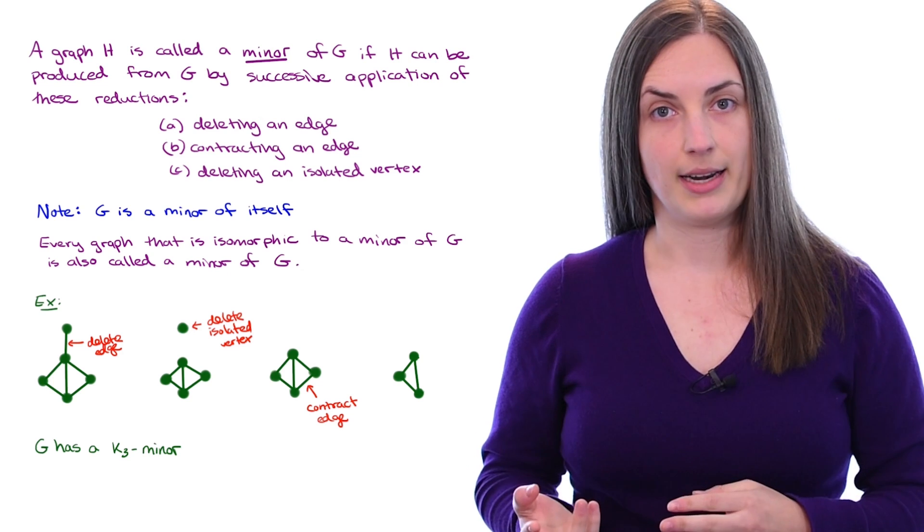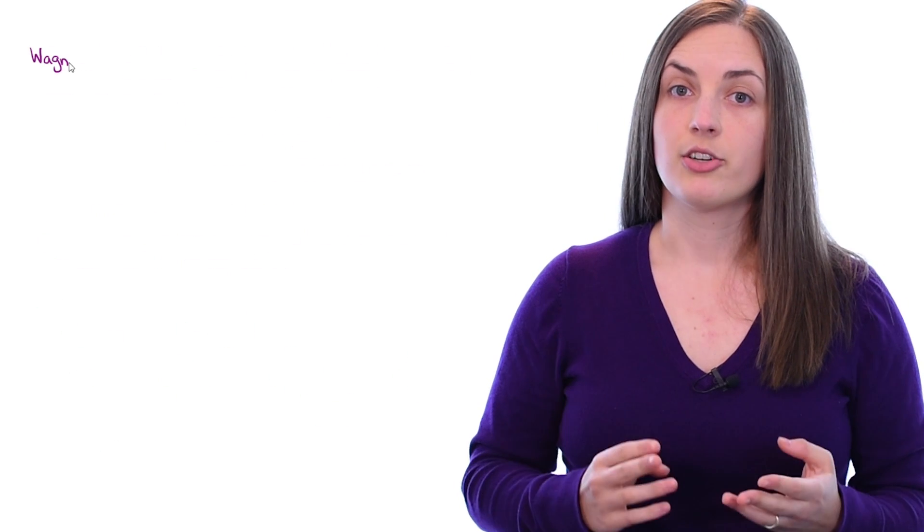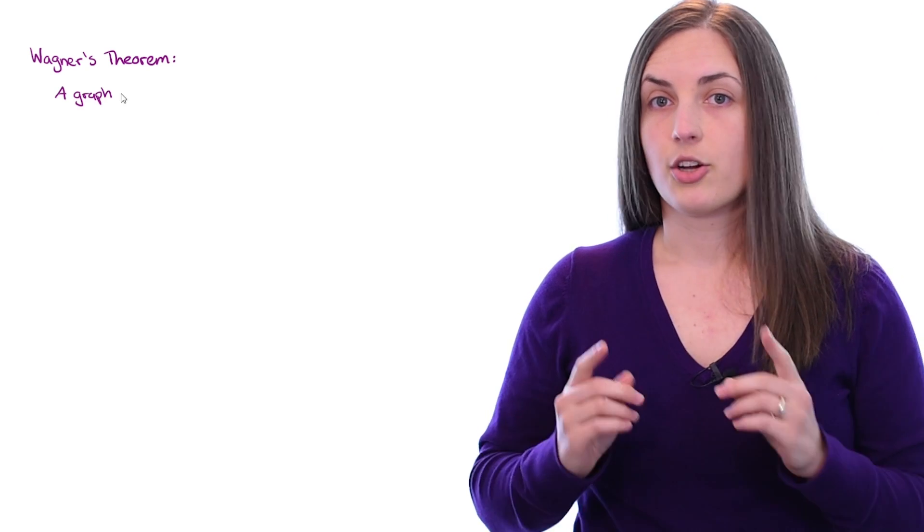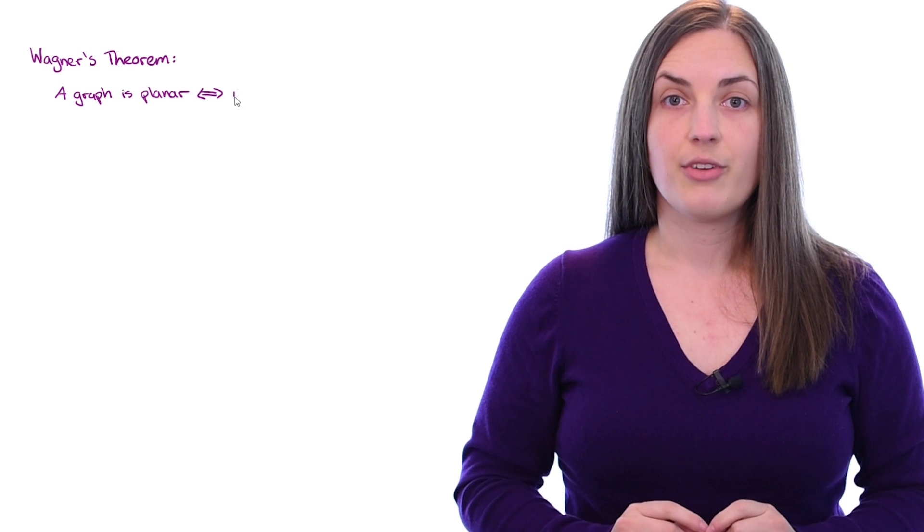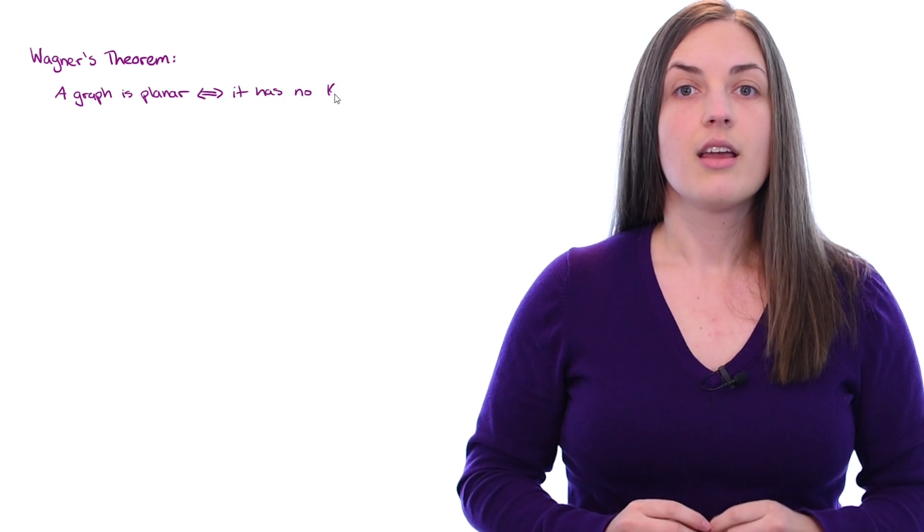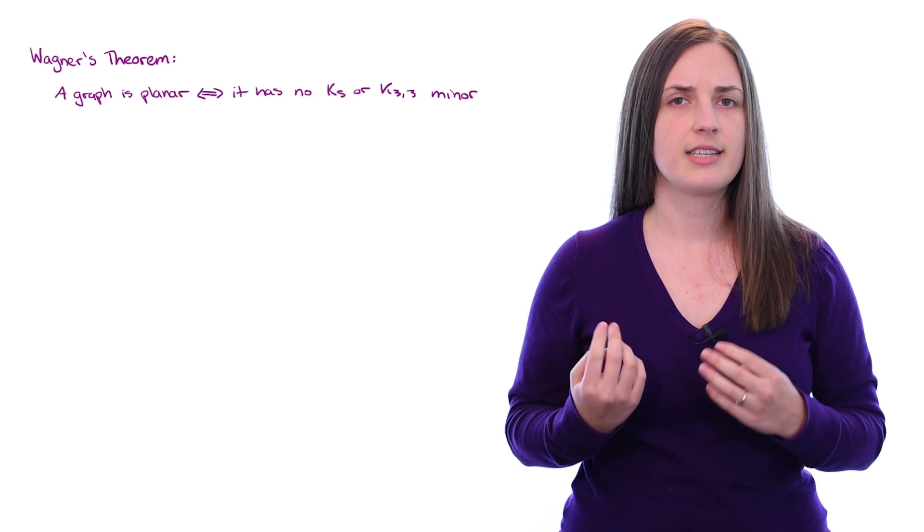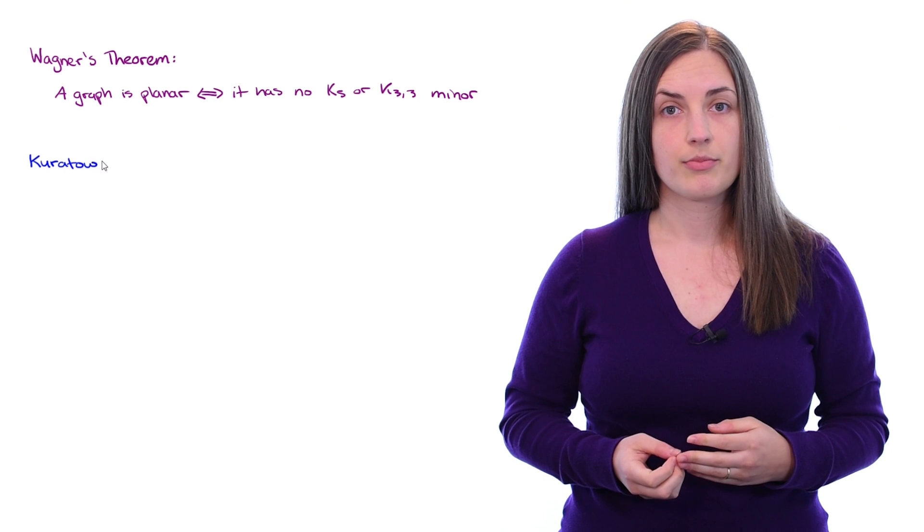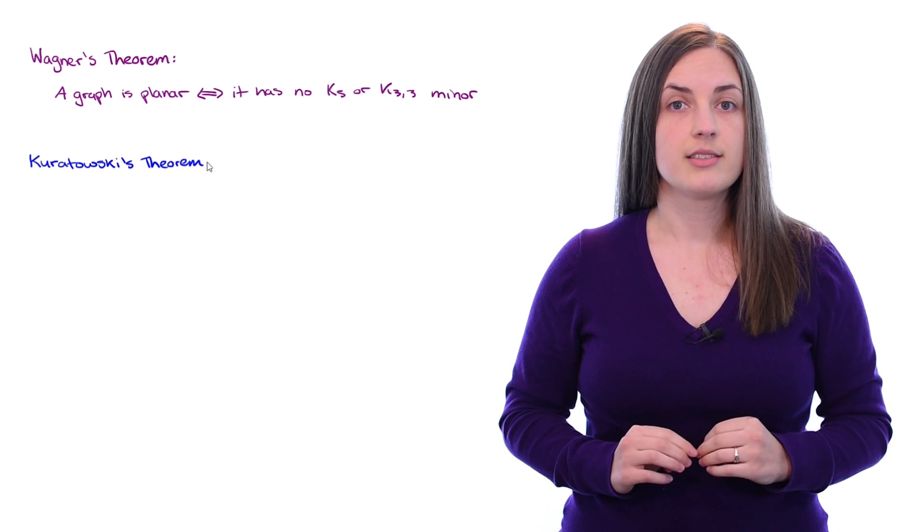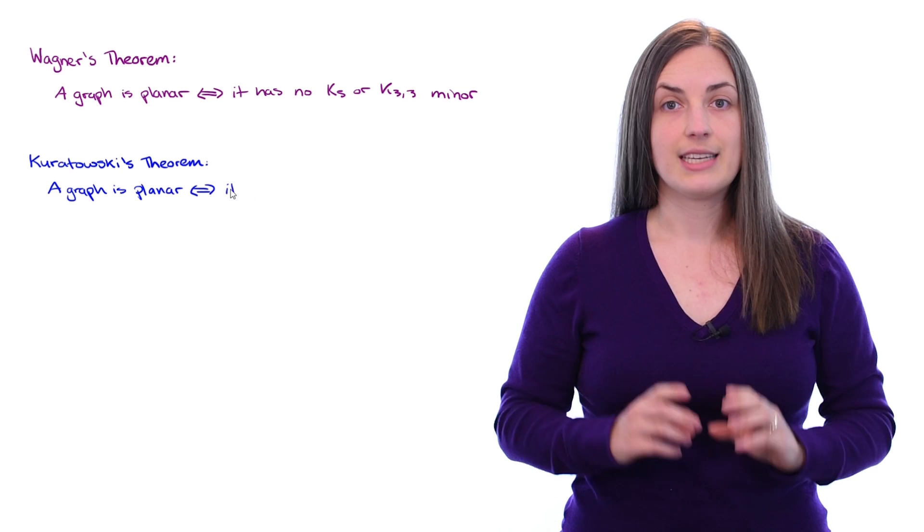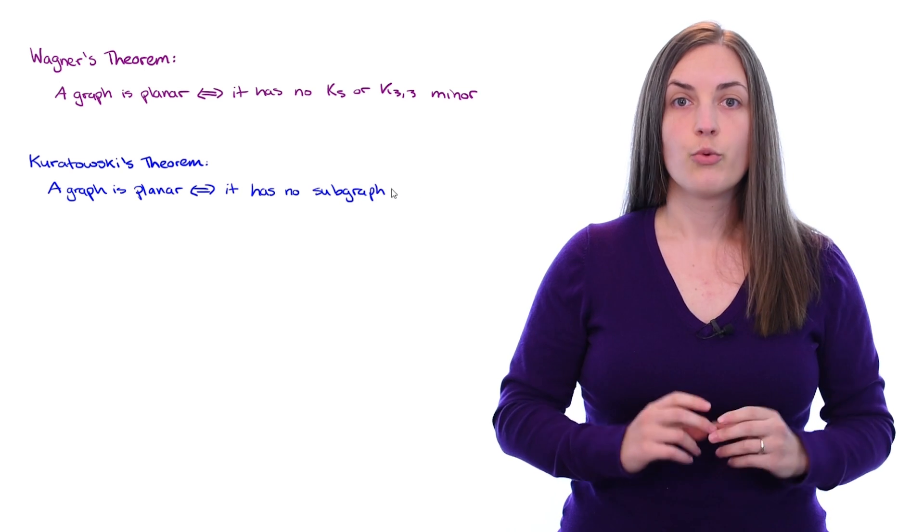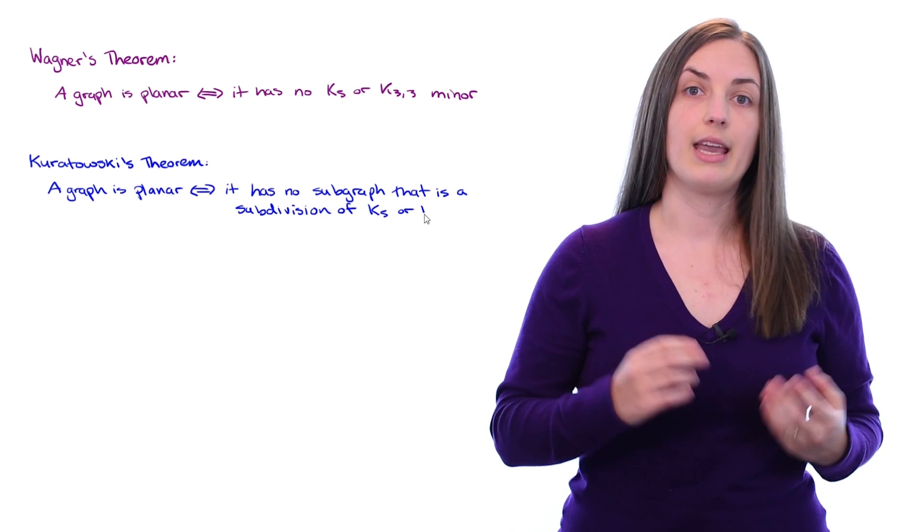Now that we've defined a graph minor, we can state Wagner's theorem, which is a characterization of planar graphs. Remember, we're only considering finite graphs. Wagner's theorem says that a graph is planar if and only if it does not contain a K5 or K33 minor. Let's compare this statement with Kuratowski's theorem. Kuratowski's theorem says that a graph is planar if and only if it does not contain a subgraph which is a subdivision of either K5 or K33.